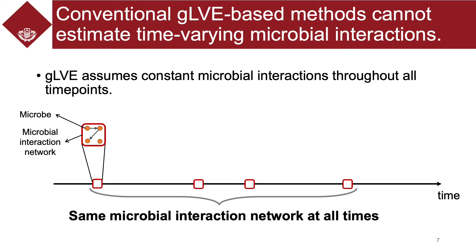However, conventional GLVE-based methods cannot estimate time-varying microbiome interactions. This illustration shows estimation of conventional GLVE-based methods. The x-axis indicates time, and each square indicates the estimated microbiome interaction network at each time point. Each circle in the square indicates a microbe. GLVE assumes constant microbiome interactions throughout all time points.